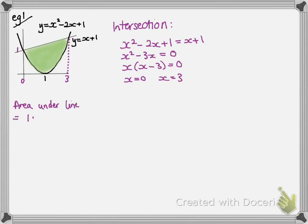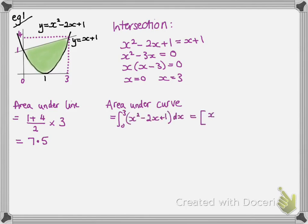Now if we go for the area under the line, we could integrate it, but it's easier to see that it's a trapezium, and work out the area that way. Now the area under the curve, between 0 and 3. Go ahead with your integration as usual, substituting your limits.